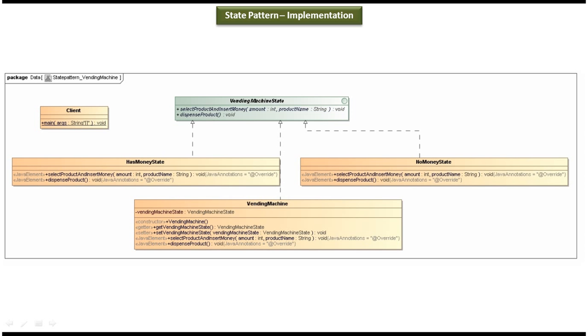Next is the VendingMachine class — this is the main class. This VendingMachine object maintains the states internally. Initially it will be in NoMoneyState. Once you select the product and insert the money, the state will be moved to HasMoneyState. Internally it maintains a VendingMachineState, which can be HasMoneyState or NoMoneyState. It overrides the selectProductAndInsertMoney method and the dispenseProduct method. The last class is Client, which has the main method and is used to demonstrate this state design pattern.